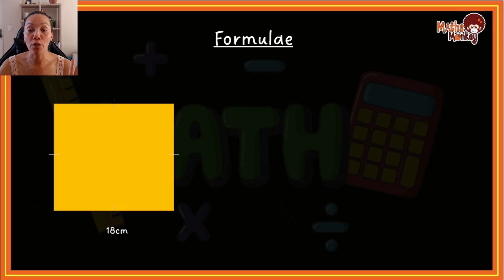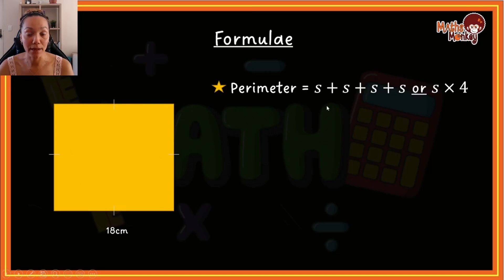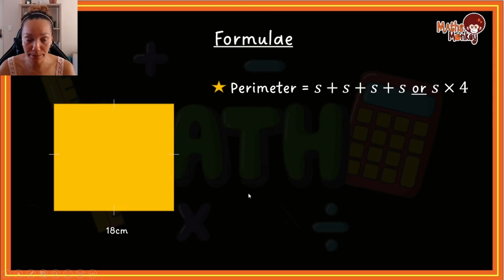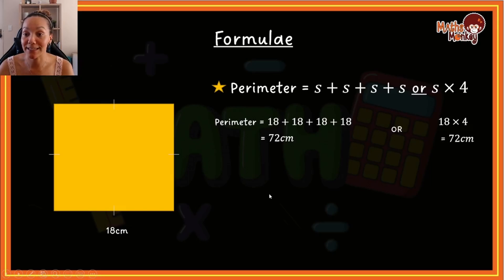The formula for the perimeter of a square is as follows. With perimeter, you always add the outside lengths. In a square, all four lengths are the same, so the perimeter is easy to find. You can say side plus side plus side plus side, or side multiplied by four. Using this square with a length of 18 centimeters, you do 18 plus 18 plus 18 plus 18, or 18 multiplied by four — both give you 72 centimeters. Note that the answer is in centimeters.